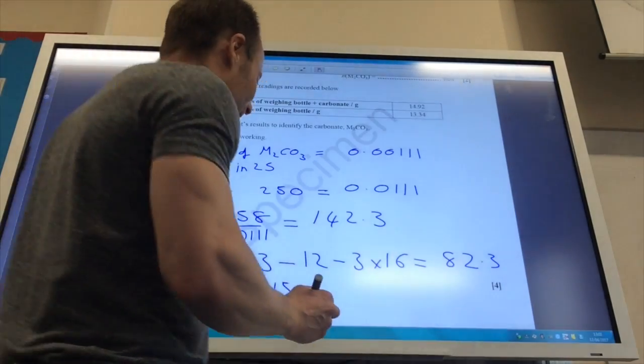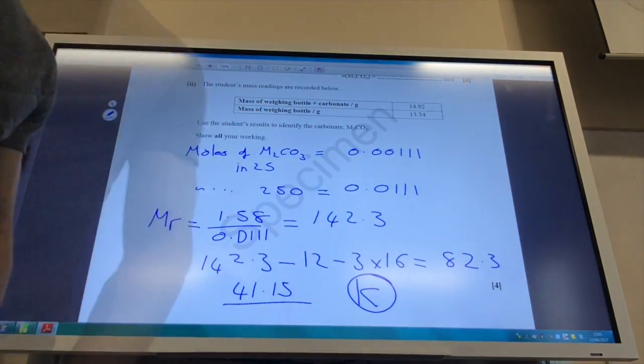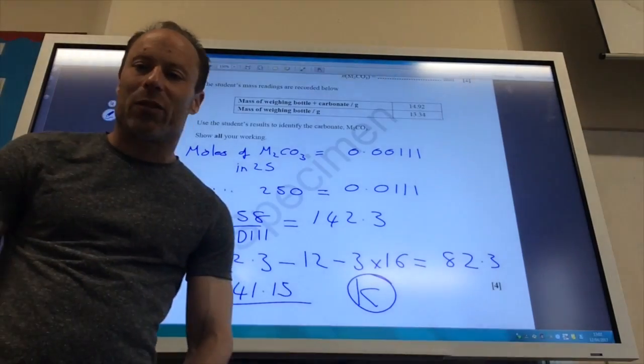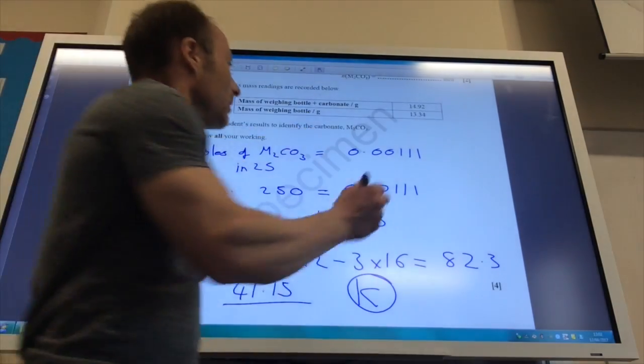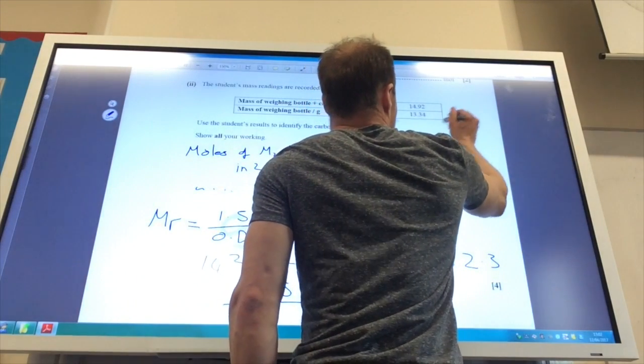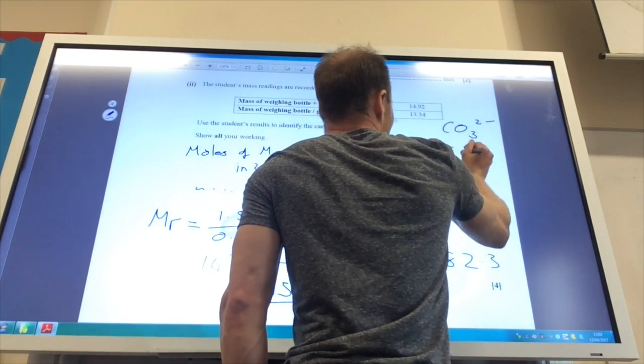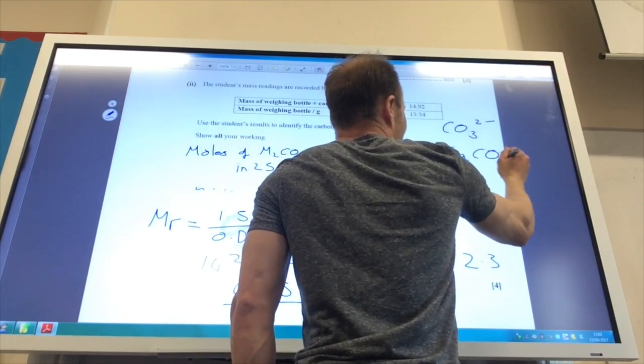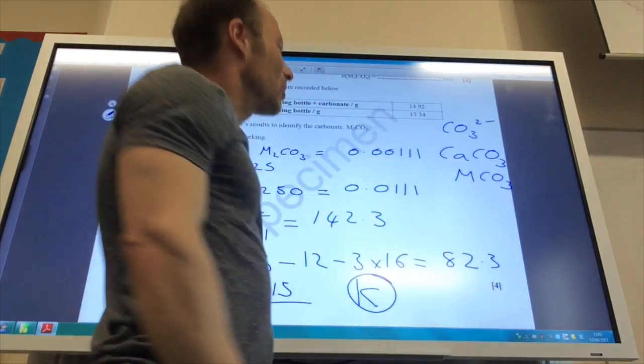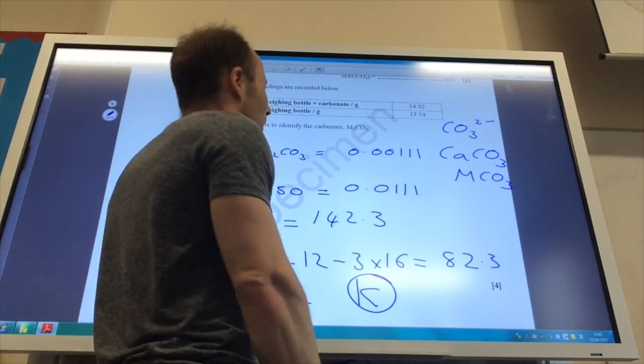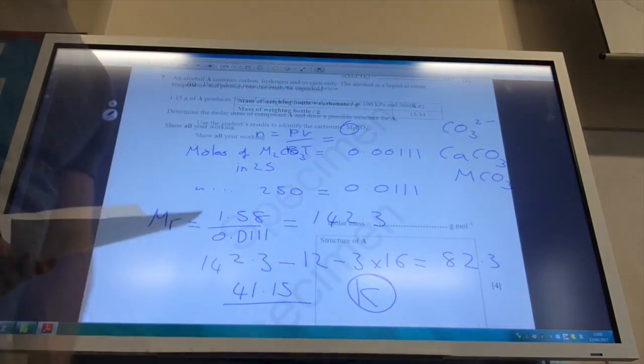Therefore, if you look at your periodic table, M is potassium. Just in case you're wondering why it can't be calcium, it's got to be group 1, hasn't it, because it's M2CO3. Remember, CO3 is CO3 2 minus. If it was calcium carbonate, it would just be MCO3, because calcium's got a charge of plus 2. So it's got to be group 1 for M.